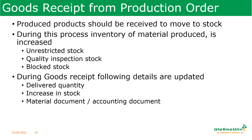Next is goods receipt from the production order. Once the products are produced, we have to receive them from the production order. The produced product will be added to inventory — it may go into unrestricted stock, quality inspection stock, or blocked stock. All these options are available in the production order control tab. During goods receipt, the delivery quantity, increase in stock, material document, and accounting document are all posted.